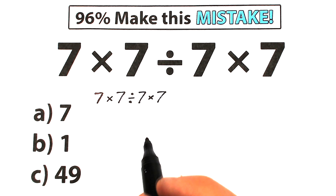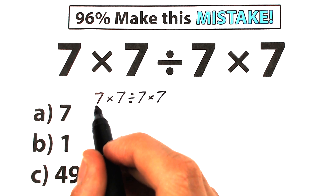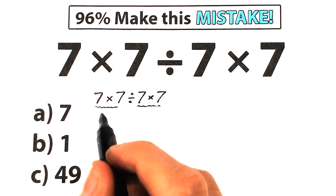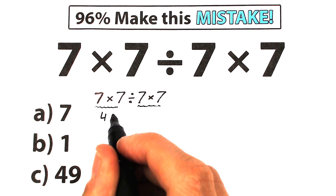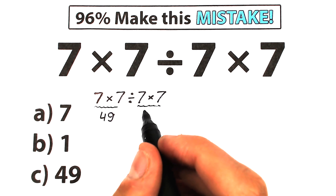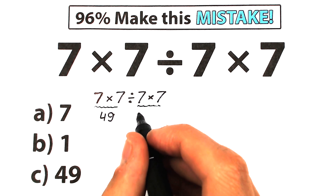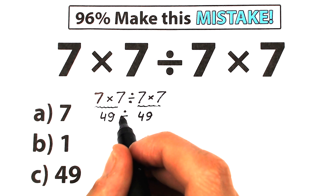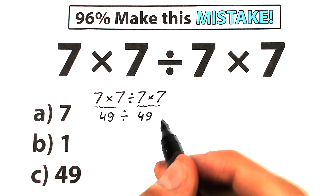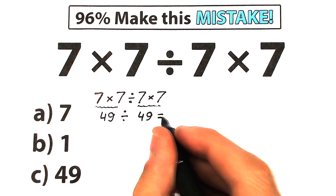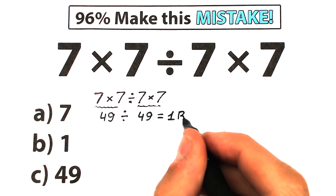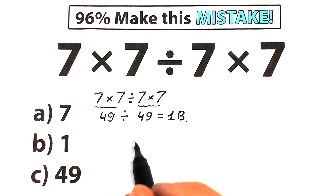A lot of students solve this question like this: they say we have multiplication on the left-hand side and the same thing on the right-hand side, so it looks like we should multiply 7 times 7, which gives us 49, and the same multiplication on the right-hand side gives us 49 as well. Then we have division in the middle, and 49 divided by 49 gives us 1. That's option B. This is an OK-looking solution, but it's a random solution — we're solving chaotically without knowing the order of operations.